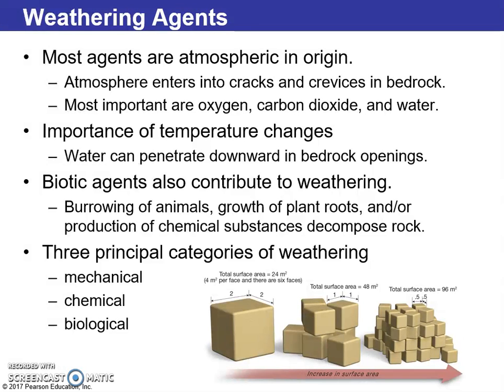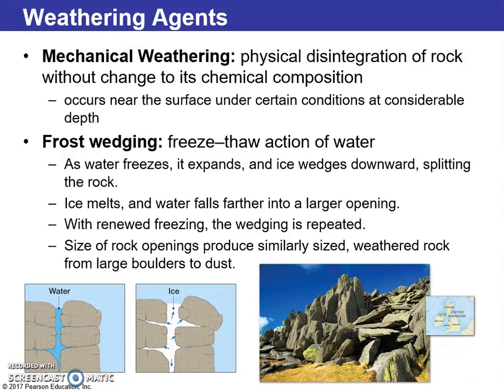The atmospheric sphere is more what we breathe and the water we ingest. Most weathering agents — as far as decomposition and degradation — are atmospheric in origin. We have the importance of temperature changes, which influence composition. Biotic agents include burrowing of animals and growth of plant roots — for instance, earthworms living in the earth, which we covered in soils. We really have three principal categories of weathering: mechanical, chemical, and biotic agents.